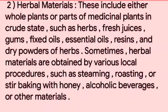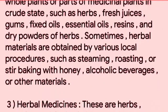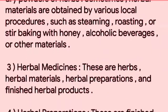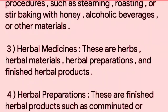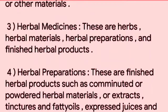Sometimes herbal materials are obtained by various local procedures, such as steaming, roasting, or stir-baking with honey, alcoholic beverages, or other materials. 3. Herbal Medicines: These are herbs, herbal materials, herbal preparations, and finished herbal products.